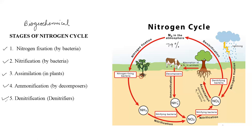As we can see in the cycle, atmospheric nitrogen is not easily accessible to plants directly, so it needs to be converted into an accessible form. The first stage is nitrogen fixation, which is carried out by two different types of bacteria. The first type are known as the symbiotic nitrogen fixers. What is a symbiotic nitrogen fixer?